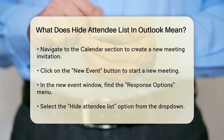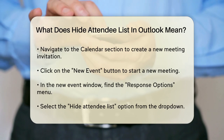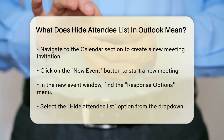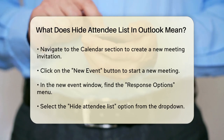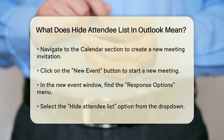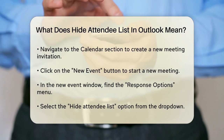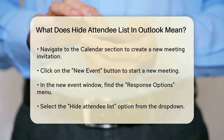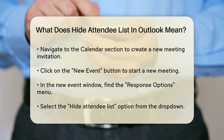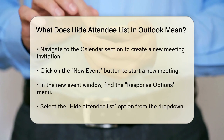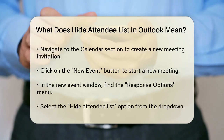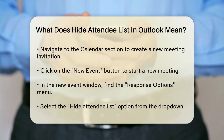Once you're in the New Event window, look for the Response Options menu. Click on this and you'll see a drop-down list. From this list, select the Hide Attendee List option. Make sure the checkbox associated with this option is highlighted.